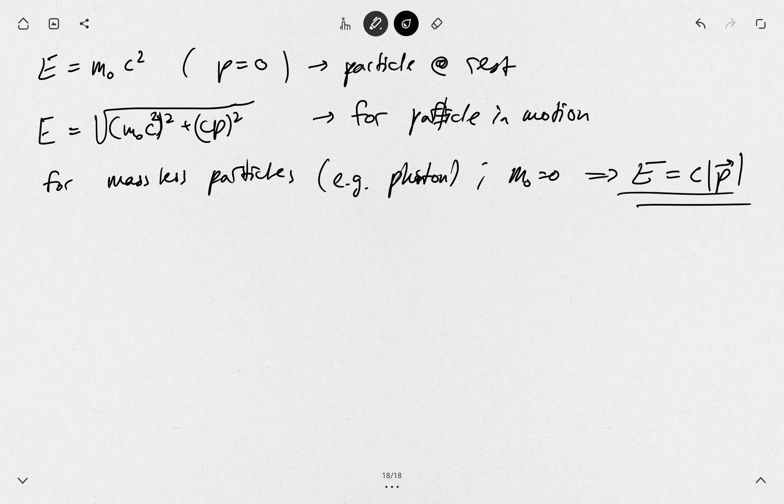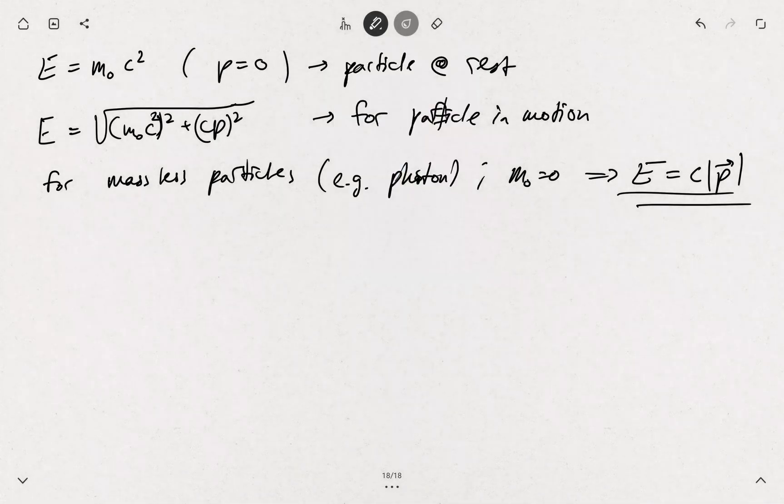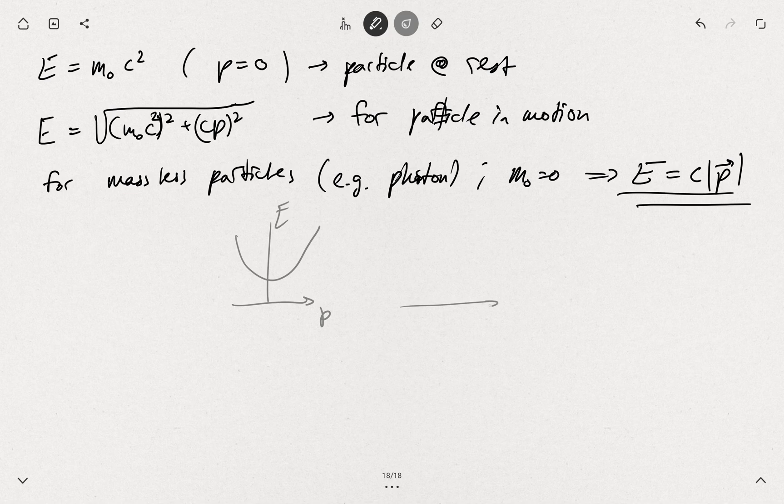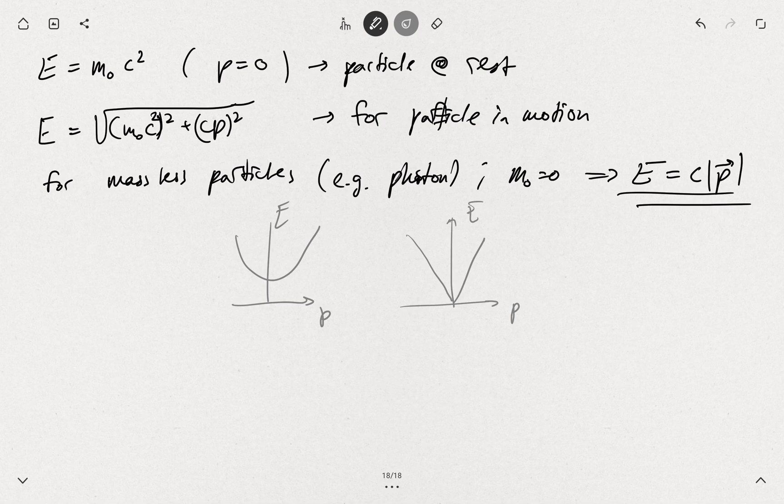It's kind of a simplistic analogy. For massive particles you will have this dispersion, and for the massless particles you will have this linear dispersion relation.